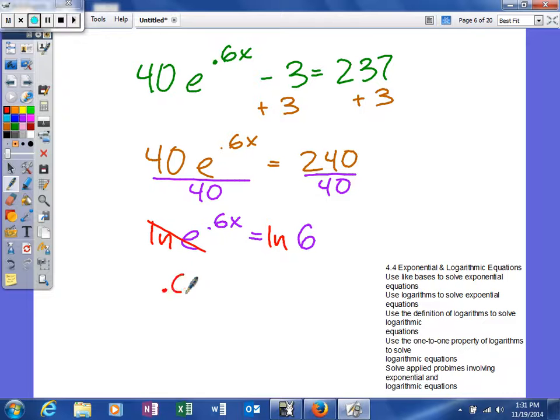And it's going to leave me .6x is equal to the natural log of 6. And then of course what I can do is divide both sides by .6. So that will cancel here.